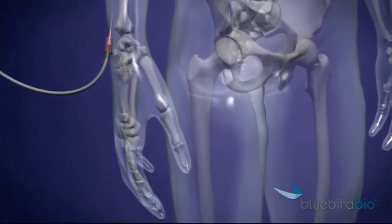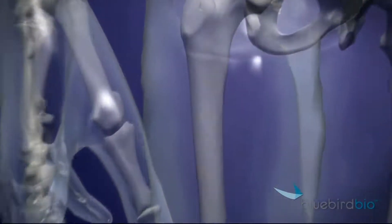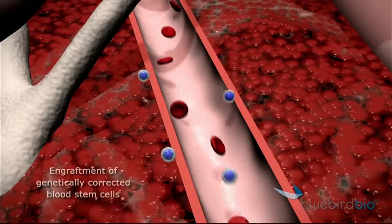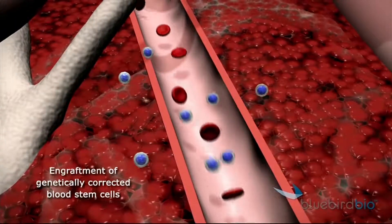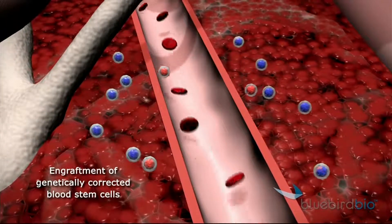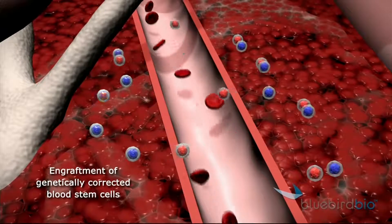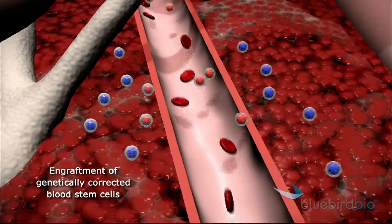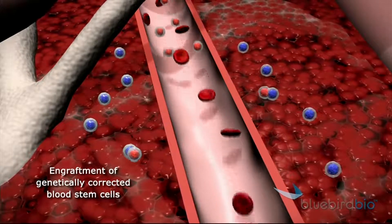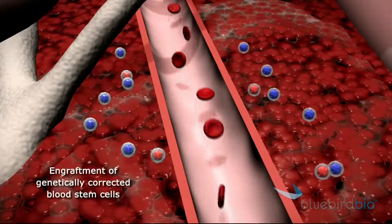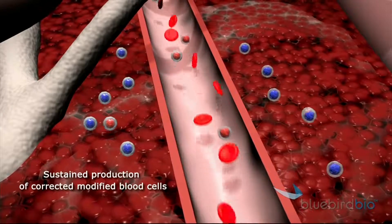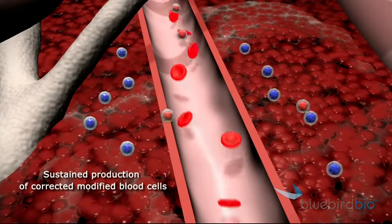We put it back into the patient — picture Ethan here. These cells seed your marrow, and they then start to produce daughter cells. All those daughter cells now know what to do. They have a functioning copy of this gene. That's great.